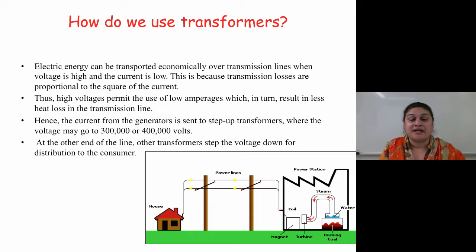On the other end, other transformers step the voltage down for distribution to the consumer. The step up transformer will be placed at the grid station and step down transformer will be placed at the house.